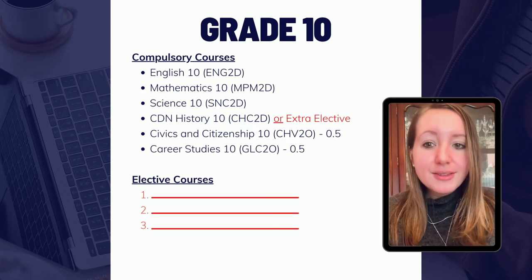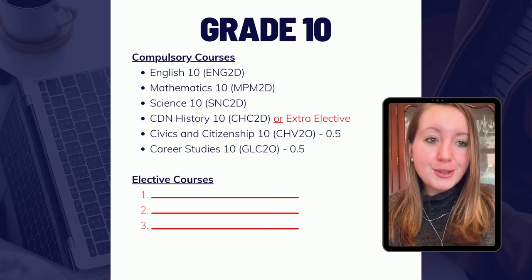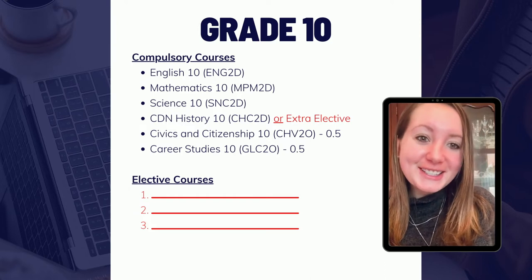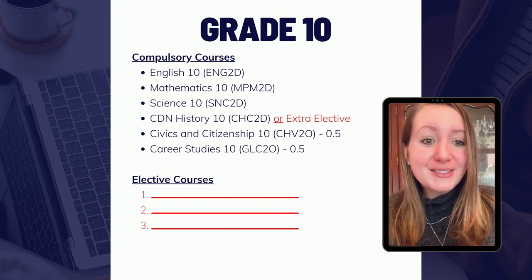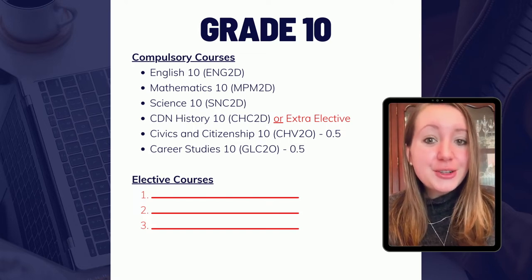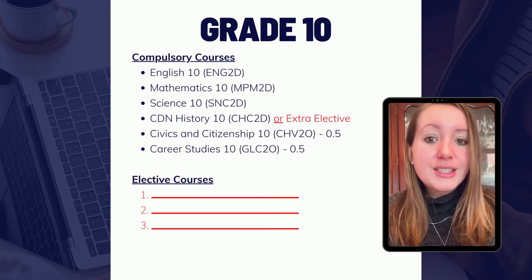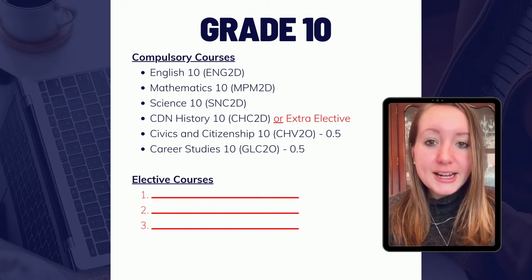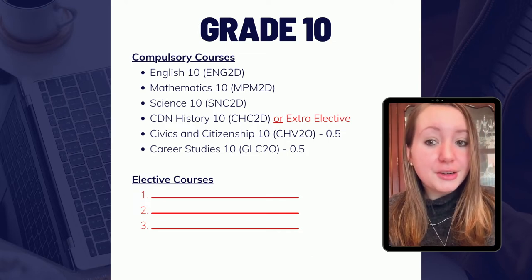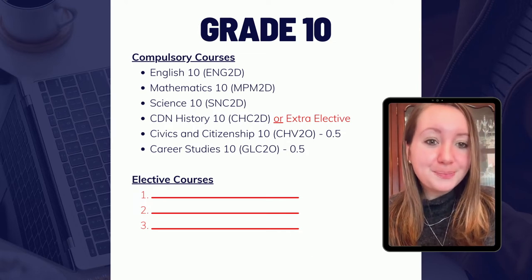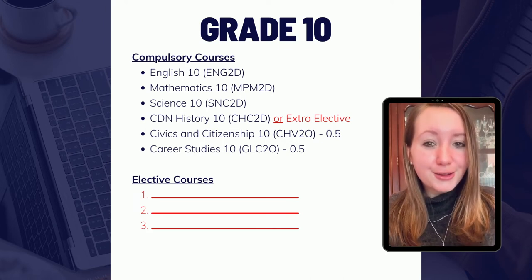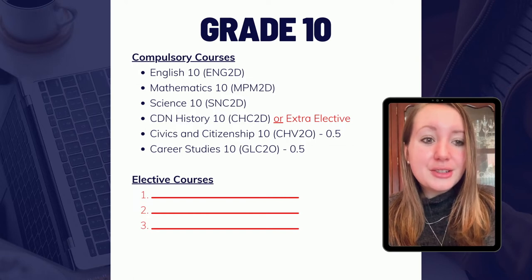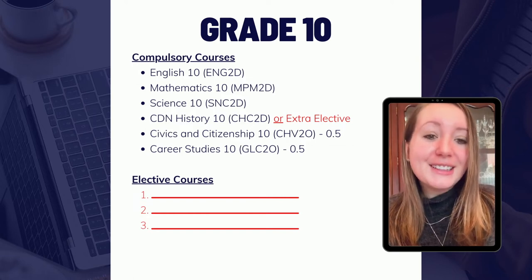There are five compulsory courses for grade 10 students: English, Math, Science, Canadian History, as well as Civics and Careers. Civics and Careers are two separate courses, each worth 0.5 credits — half the year students will study Civics, and the other half will be devoted to Careers. Aside from these five compulsory courses, students are able to select three elective courses to complete their full course load of eight classes.